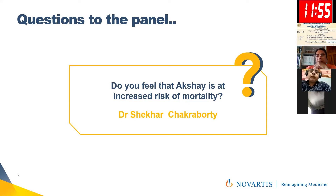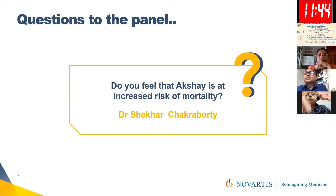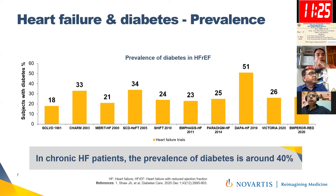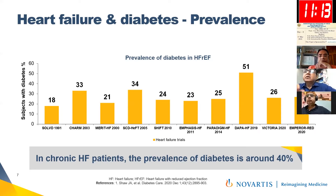Thank you, Dr. Mondol, for the wonderful case presentation. It is obvious that heart failure and diabetes have a combined incidence and prevalence. Since 1991, a lot of trials have been conducted — SOLVD, CHARM, MERIT-HF, SCD-HeFT, EMPHASIS-HF, PARADIGM-HF, DAPA, VICTORIA, and EMPEROR-Reduced in 2020 — all have shown that in chronic heart failure the prevalence of diabetes is around 40%. So a good combination of heart failure and diabetes already prevails.